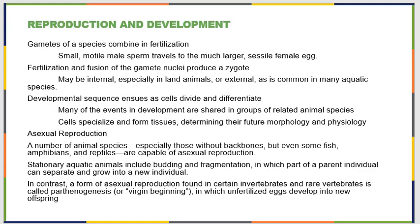For reproduction and development, there are some specialized features. For sexual reproduction, the gametes of species combine in a process known as fertilization, when small movable sperm travels towards larger eggs that are usually not moving themselves. They may be brushed down fallopian tubes by beating cilia, but they themselves do not move. Fertilization and the fusion of gametes produces a diploid nuclei in an organism called a zygote. This process may be internal, especially if you live on land, or it might be external, especially for those organisms who reproduce in water.